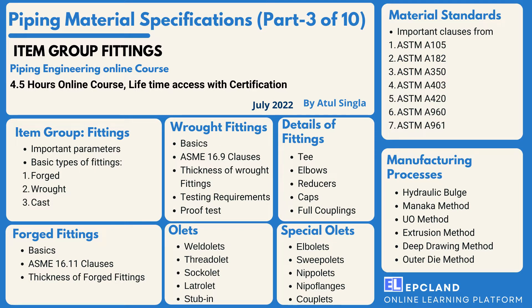We'll then go into the details of each fitting type — tees, elbows, reducers, caps, and full couplings. For each item, we'll first cover the basics of what these items are, then the various clauses and the things we really need to understand when working on any piping material specification.